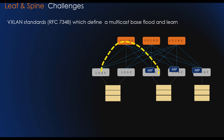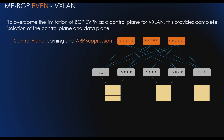Multiple VXLAN segments can share a single IP multicast group in the core; however, overloading of multicast groups leads to suboptimal multicast forwarding. End host information learning and VTEP discovery are both done in the data plane with no control plane protocols. To overcome this limitation, leaf and spine architecture uses MP-BGP EVPN as a control plane for VXLAN, providing complete isolation between control plane and data plane learning.